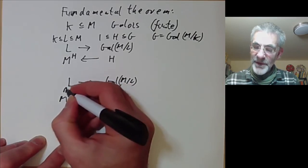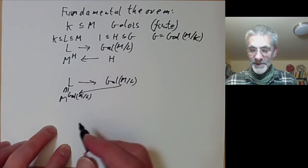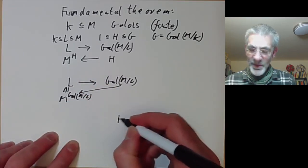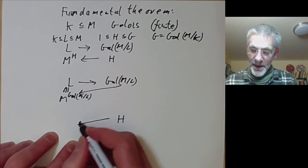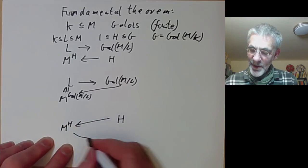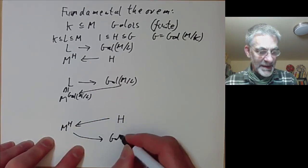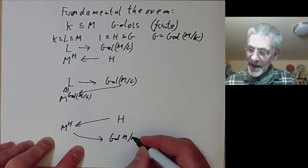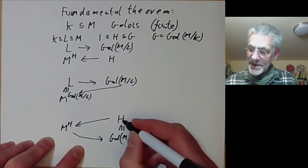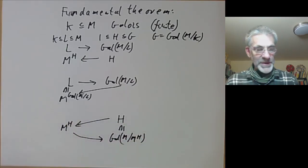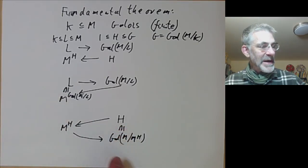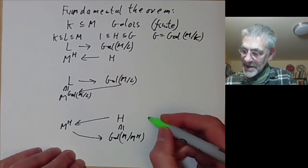First of all, it's obvious that L is contained in that fixed field. On the other hand, if we start with the subgroup H, then we go to the fixed field M^H, and we now want to go to the Galois group of M over M^H. H is obviously contained in this, and what we want to show is that these two are actually equal.